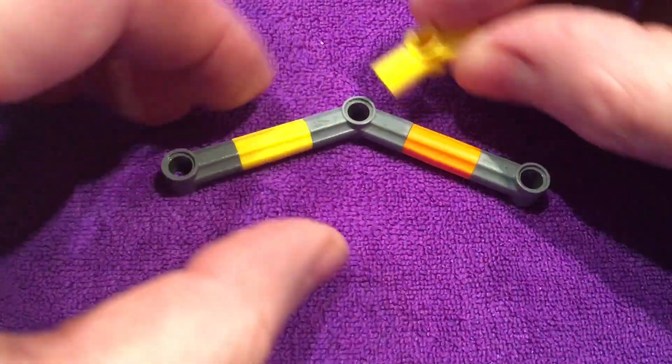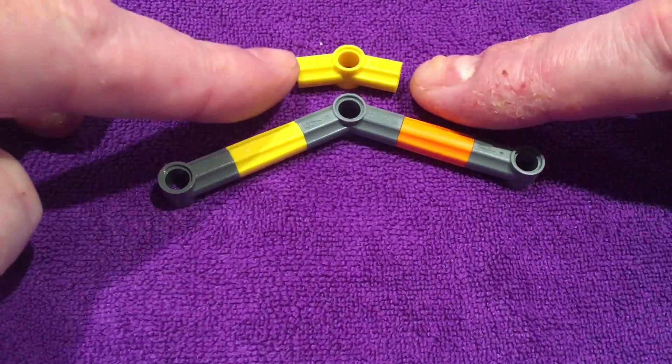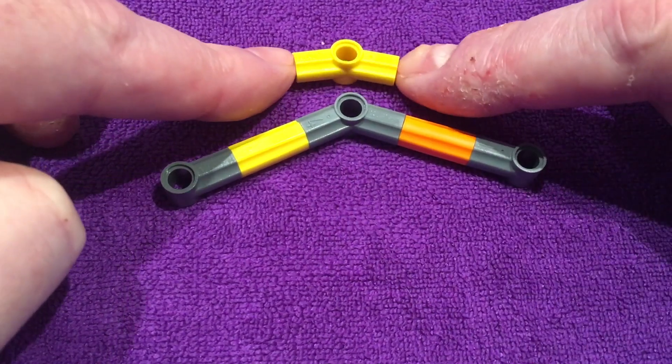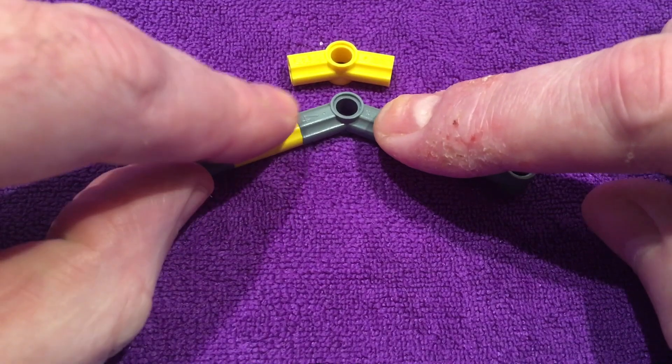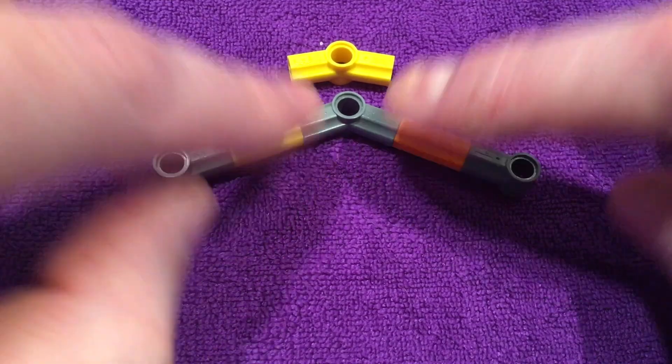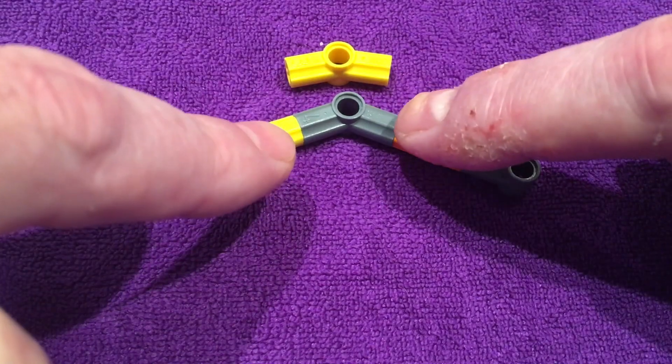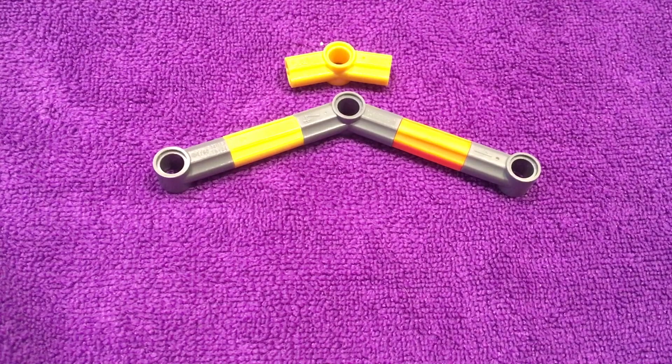So this angle piece here has a wider or broader angle than this one does. This is also available in Lego sets. This angle has a smaller angle than this one does. This one's wider, and this one is more narrow. You can use either one of these to build your Hoberman sphere, and it'll give you basically a different design.